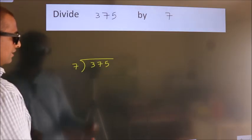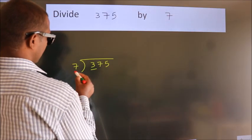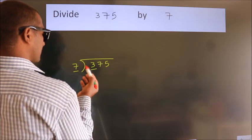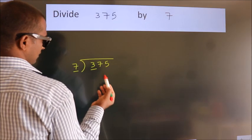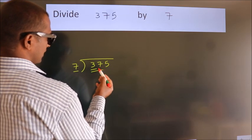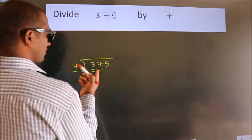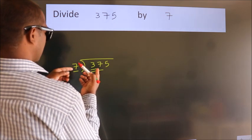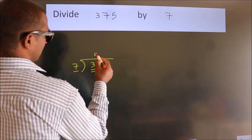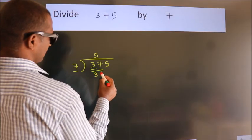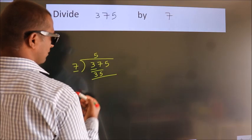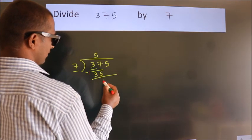Next, here we have 3 and here 7. 3 is smaller than 7, so we should take 2 numbers: 37. A number close to 37 in the 7 table is 7 fives, 35. Now we should subtract. We get 2.